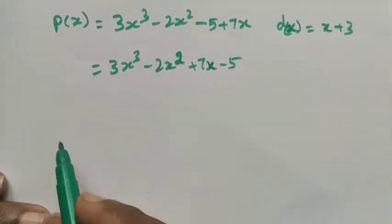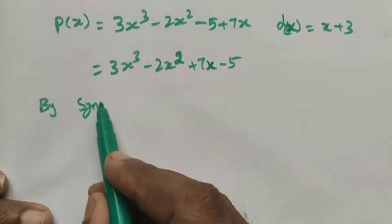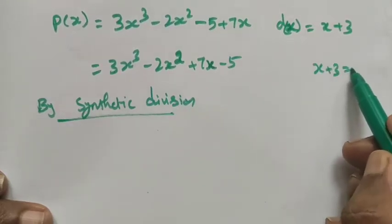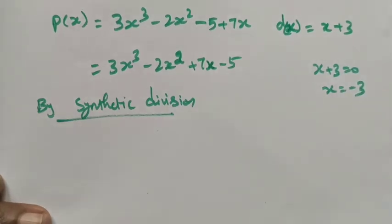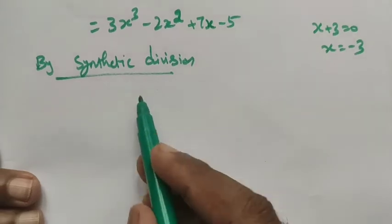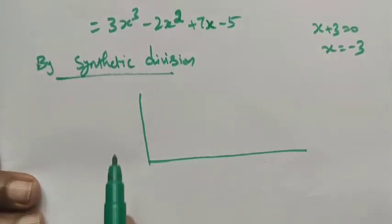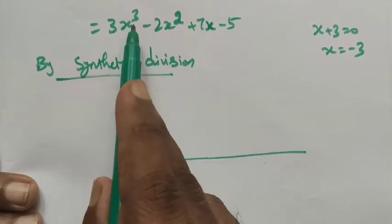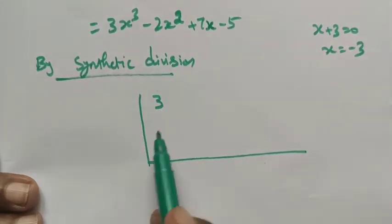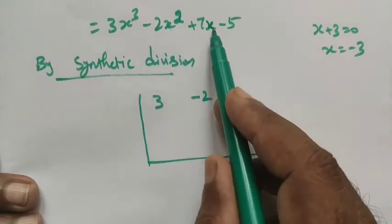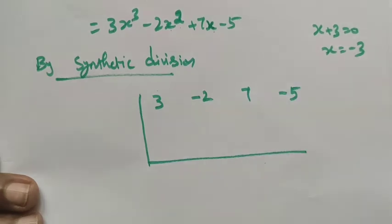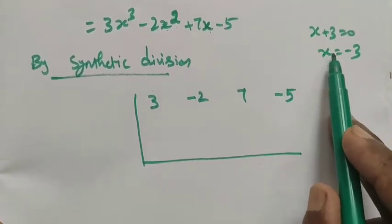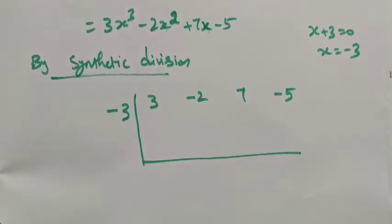We are using synthetic division. For x + 3 = 0, x = -3, so the divisor number is -3. In this method we take only the coefficients, not the variables. The coefficient of x³ is 3, coefficient of x² is -2, coefficient of x is 7, and the constant term is -5. The divisor value used is x = -3.